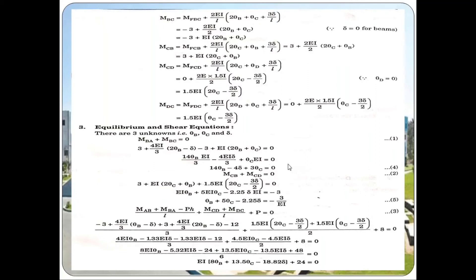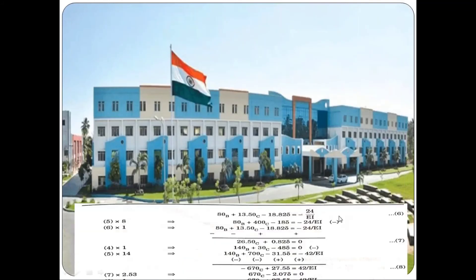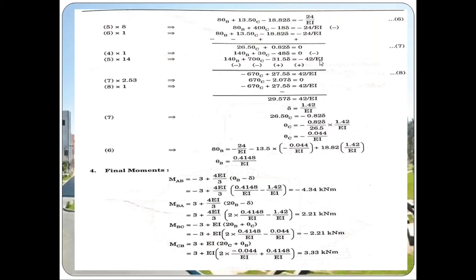We now have three equations with three unknowns: theta B, theta C, and delta. Solving using a calculator in equation mode, we get: delta equals 1.42 divided by EI, theta C equals minus 0.04 divided by EI, and theta B equals 0.44148 divided by EI. Substituting these back into the slope deflection equations gives the final moments: MAB equals minus 4.34 kilonewton meter, MBA equals 2.21 kilonewton meter, and similarly MBC, MCB, MCD, MDC can be obtained.